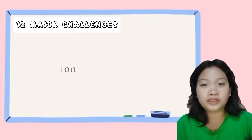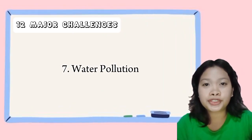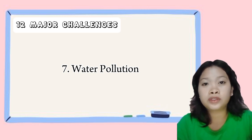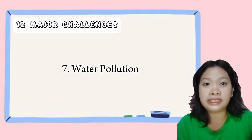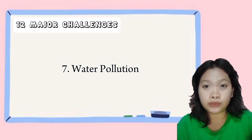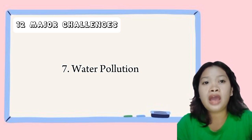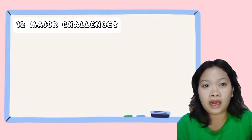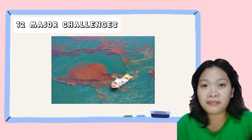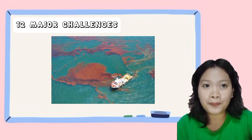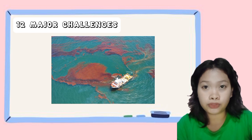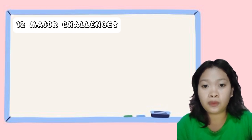Next is water pollution. Water pollution can harm aquatic life and make water unsafe for human consumption. Water pollution is caused by the release of pollutants such as chemicals, oil, sewage, and agricultural runoff into waterways. For example, an oil spill that harms marine life and makes beaches unsafe for swimming. Another example is the release of untreated sewage into rivers or the ocean, which can cause water pollution.